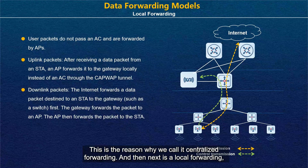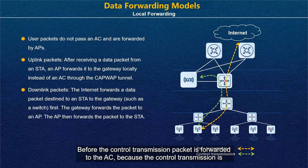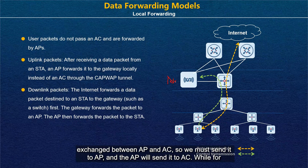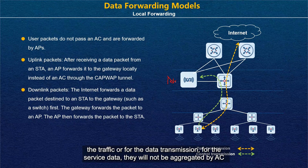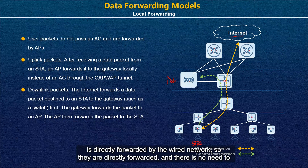In local forwarding, the arrows are different. Control transmission is still forwarded to the AC, since it is exchanged between AP and AC. However, for data transmission — the service data — it will not be aggregated by the AC at all. The data traffic between the internet and the STAs is directly forwarded by the wired network, with no need to go through the AC.